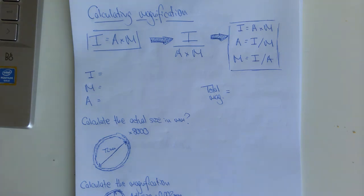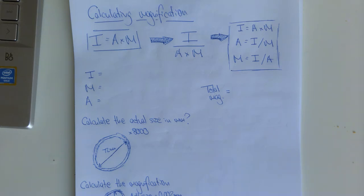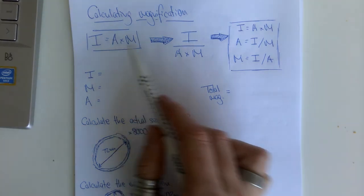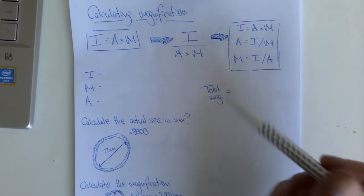Hello, welcome to our final vision tutorial relating to the use of microscopes in your science course. The last area in relation to microscopes that we have to look at is how we go about using information from microscope images to calculate magnification of a particular image, the actual size of the object within the image. There is a formula we need to be familiar with, and the three rearrangements of that formula.